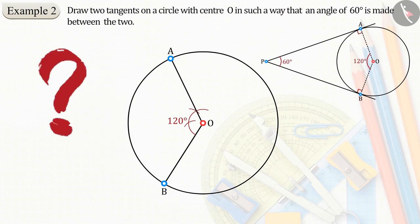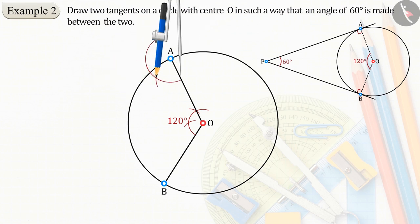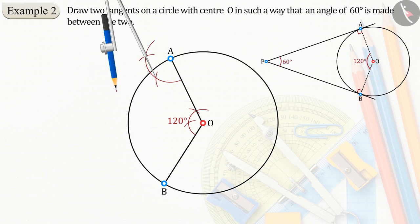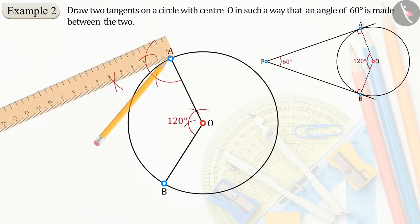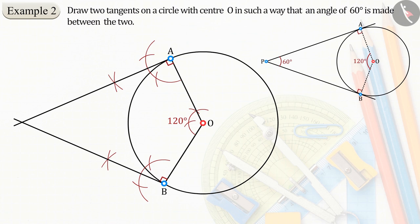Can you draw a tangent from a point given on a circle? We know that tangent line is perpendicular to the radius. So we draw perpendiculars from point A and B.